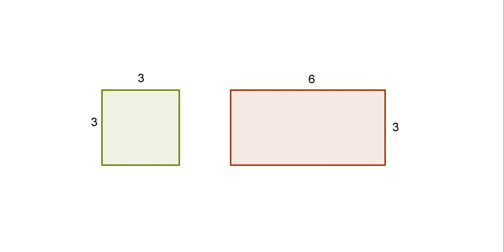We're going to have a look at area. If we want to know the area of the square which has a side length of three — how much surface does this green bit cover — and for this rectangle that has a length of six and a breadth of three, how much surface is being covered by this brown bit of the whole rectangle.